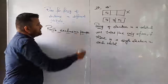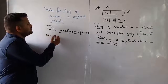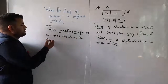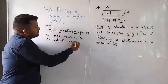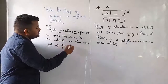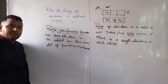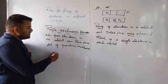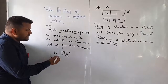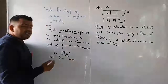Pauli's exclusion principle tells us that the two electrons in an orbital cannot have the same set of four quantum numbers. No two electrons in an orbital can have the same set of quantum numbers. If the first three quantum numbers — principal, azimuthal, and magnetic — are the same for electrons in the same orbital, then the fourth quantum number, spin, must be different.